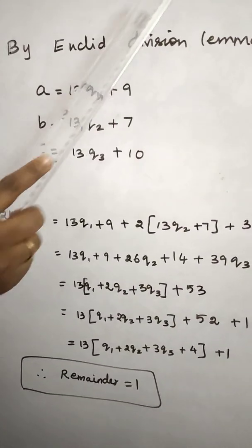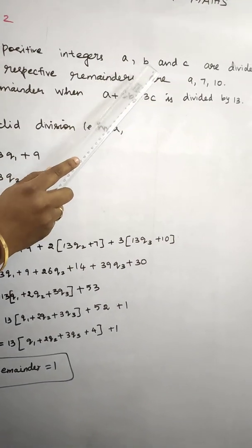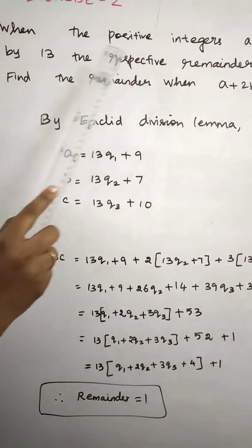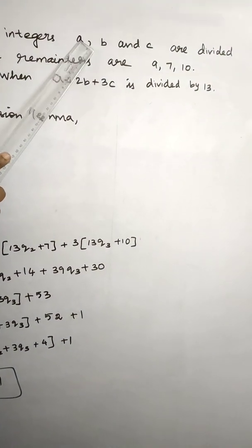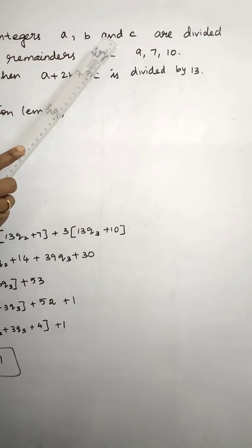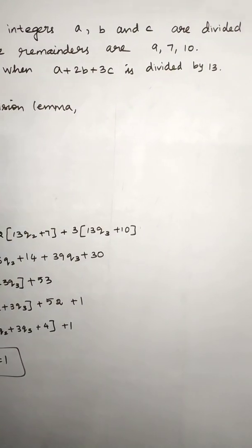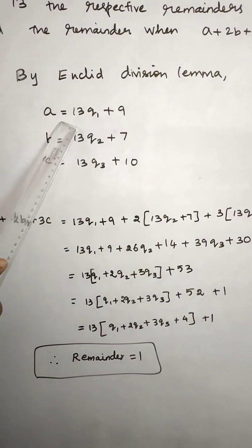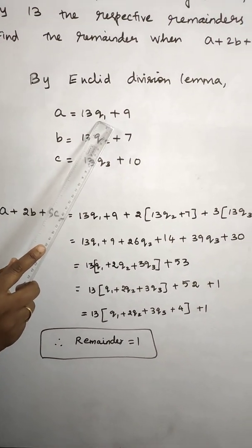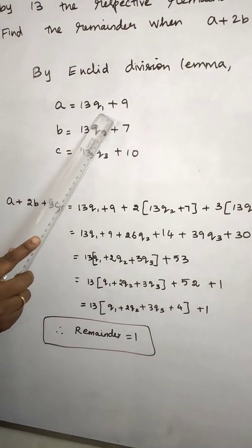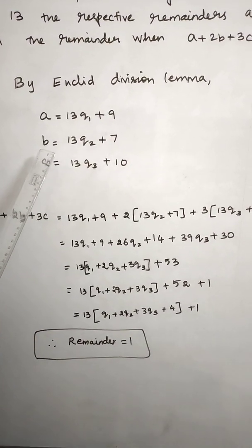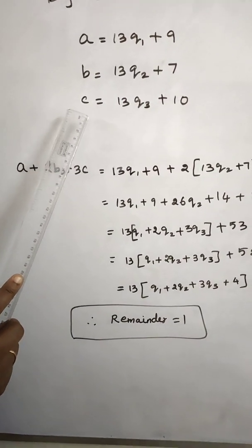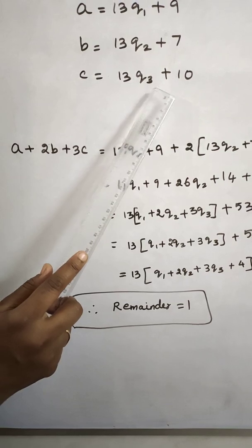So this is a dividend, which means a, b, c. So a is divided by 13, so here it is a dividend. A is divided by 13 with remainder 9, B is divided by 13 with remainder 7, and C is divided by 13 with remainder 10. By Euclid division lemma, A is equal to 13Q1 plus remainder 9, B is equal to some multiples of 13 plus remainder 7, C is equal to 13Q3 plus 10.